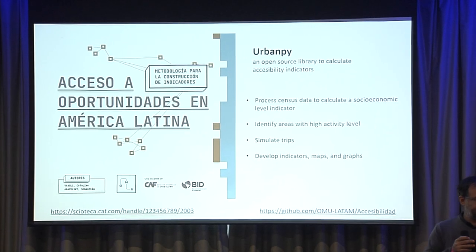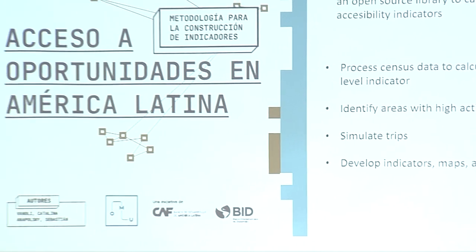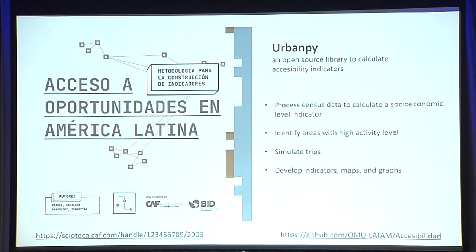This is a second project I've been doing with the Latin American Development Bank, CAF. In this case, it's also a Python package — not UrbanPy, but PyOMU. It's part of the mobility observatory, a joint initiative between the Latin American Development Bank and the Inter-American Development Bank. We are working with census data at the radio and census tract level, using OpenStreetMap to identify where people live and how the population is distributed.